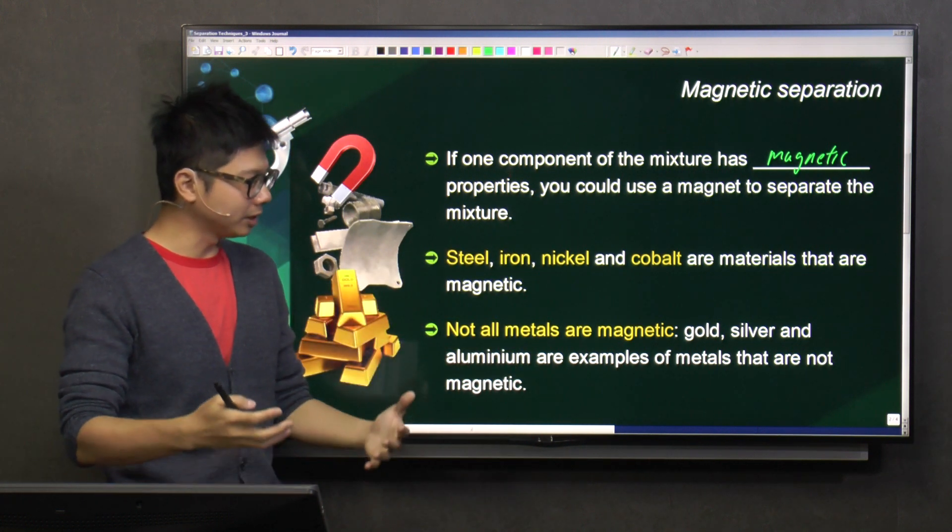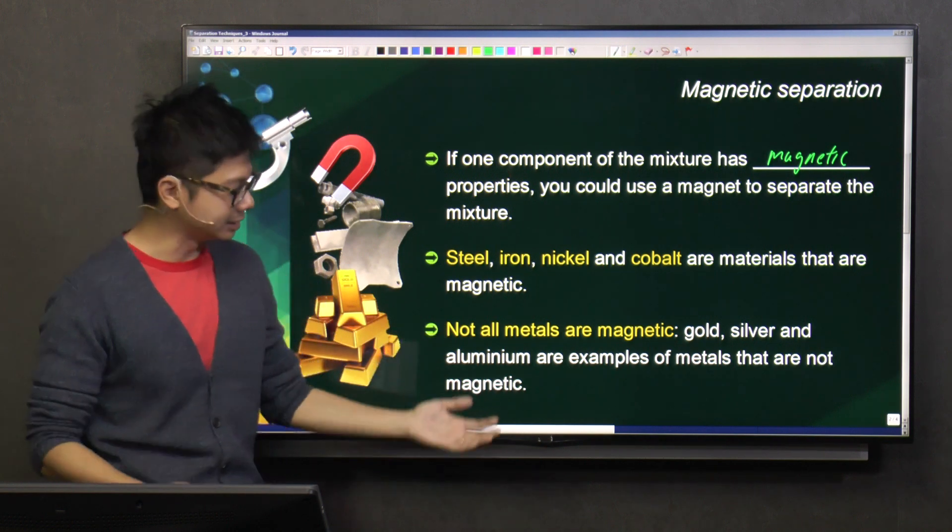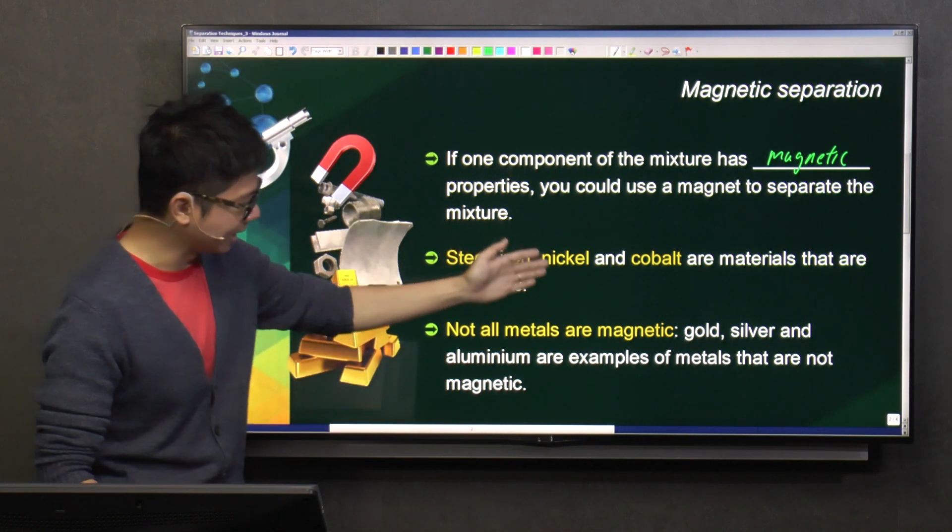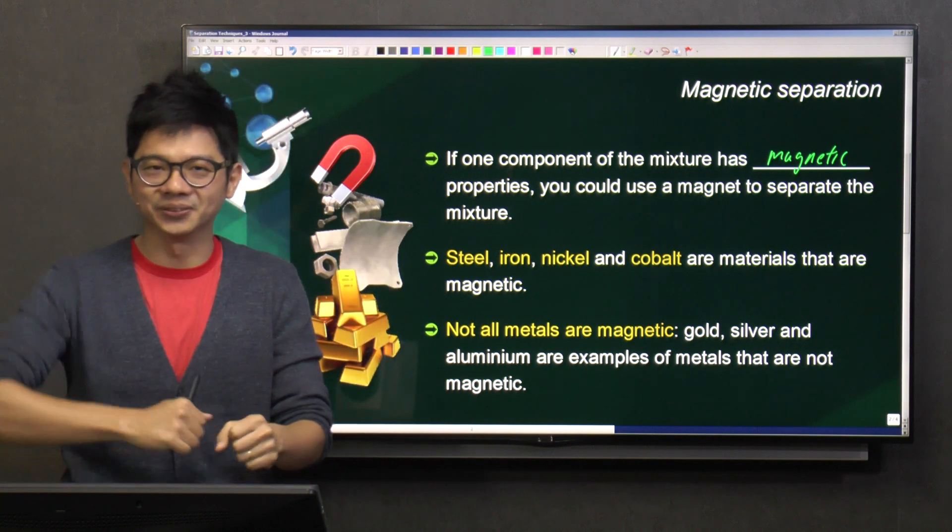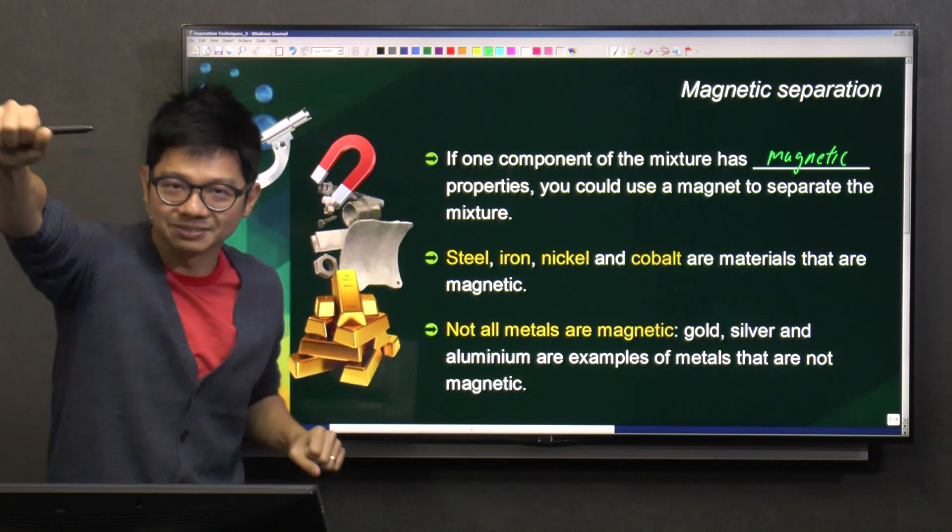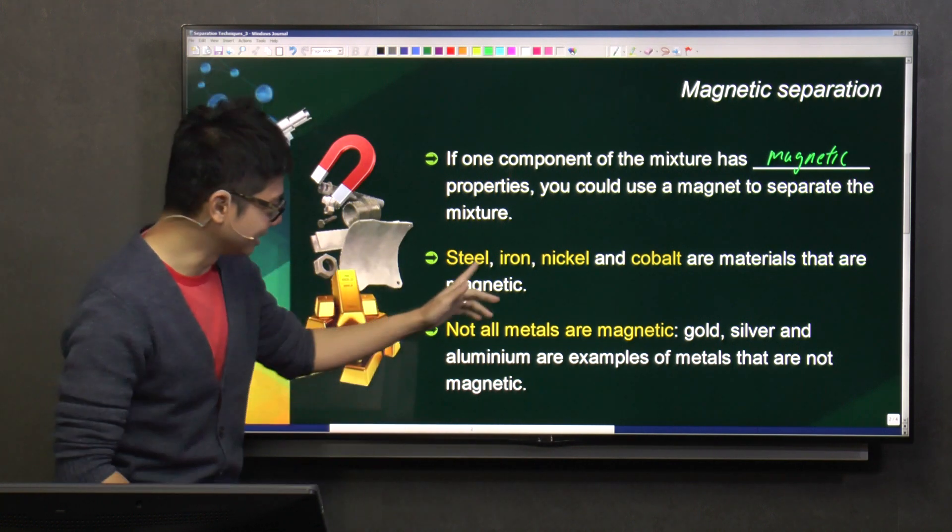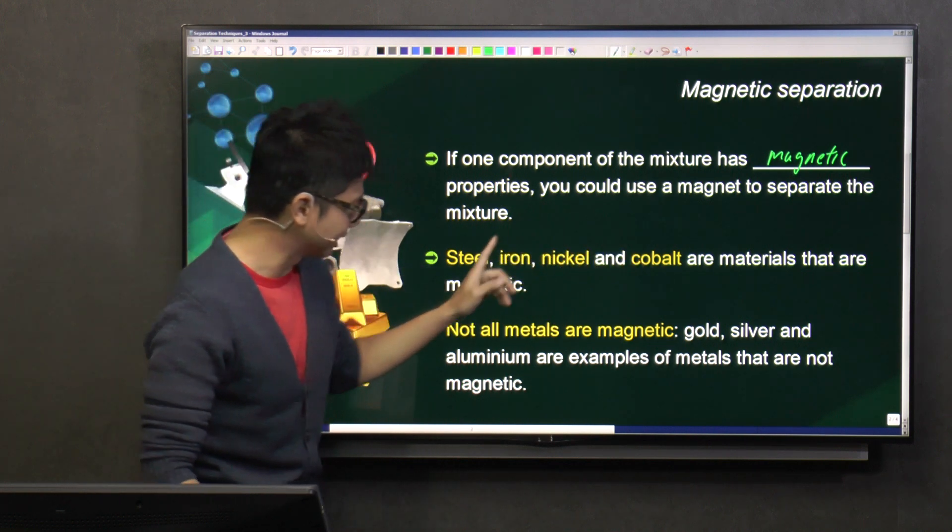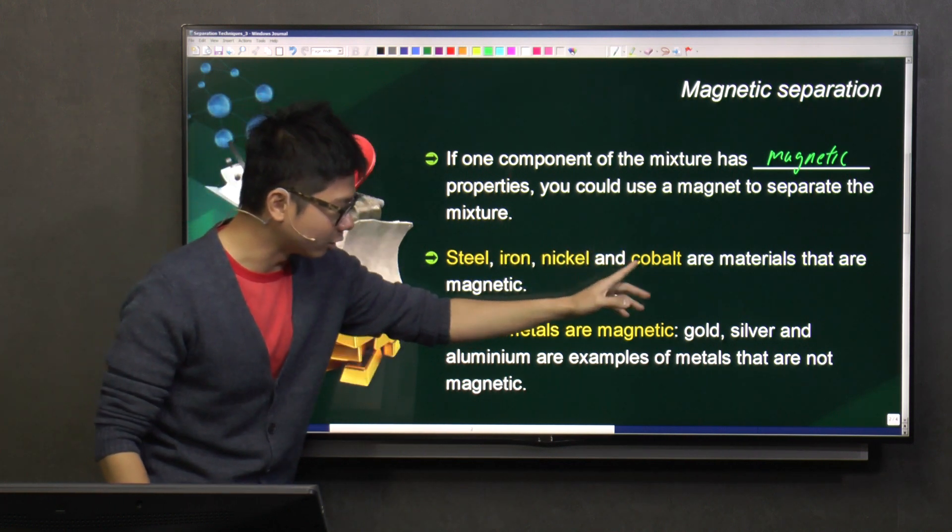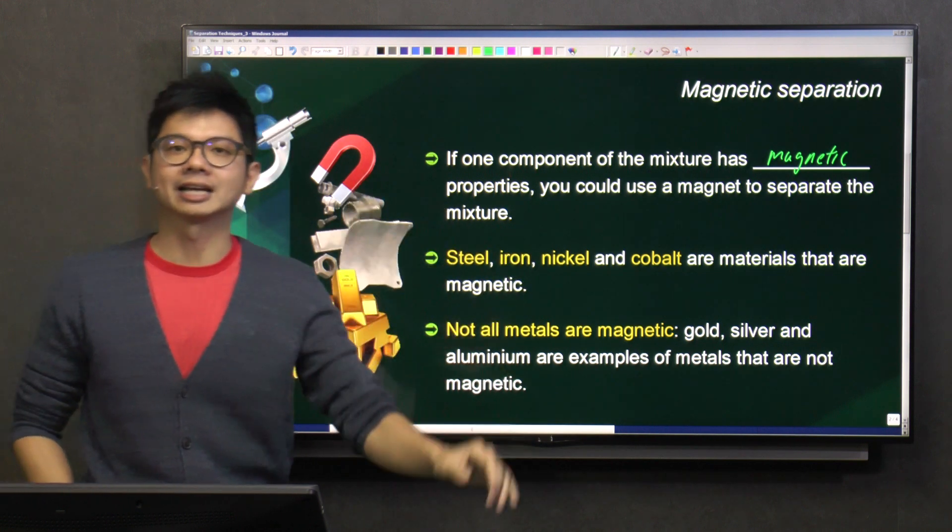So what are the magnetic materials? S, I, and C. You know how to remember? Since primary school, we taught you this method, right? Superman is not cute. Steel, iron, nickel, and cobalt. They are all materials that are magnetic.